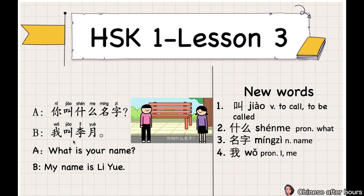我叫李悦。 我 means 'I'. 叫 means 'to be called'. 李悦 is a name. So 我叫李悦 means 'My name is Li Yue.' 你叫什么名字? 我叫李悦。